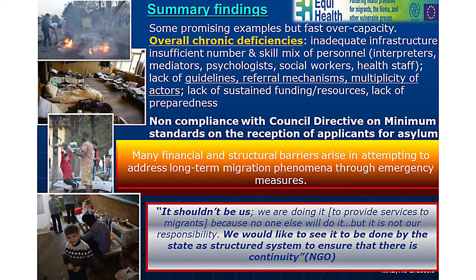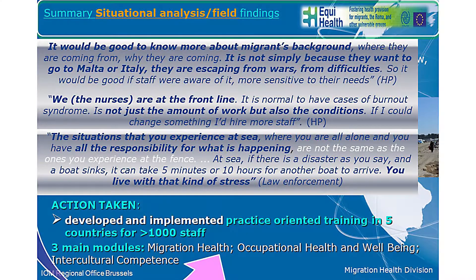When the numbers became huge, the issues could only increase because there are fundamental problems that need to be dealt with. To summarize — and this has been reiterated today — overall there are chronic deficiencies within the reception process, largely related to insufficient staffing: lack of health staff, psychologists, and mediators, both in numbers and skills. There is also non-compliance with the EU Council directive on minimum standards, even though it is a legal instrument member states have signed.